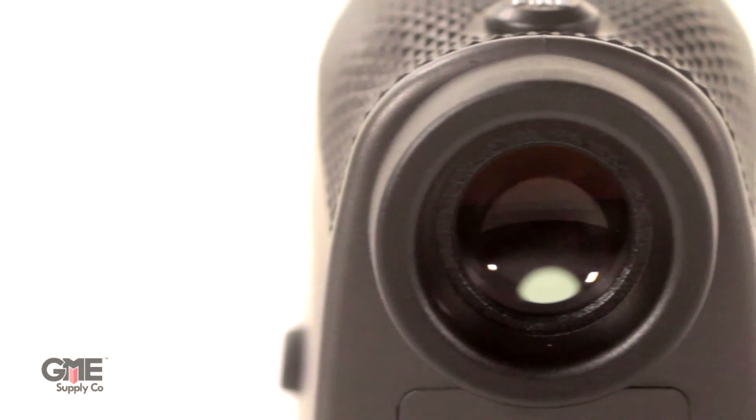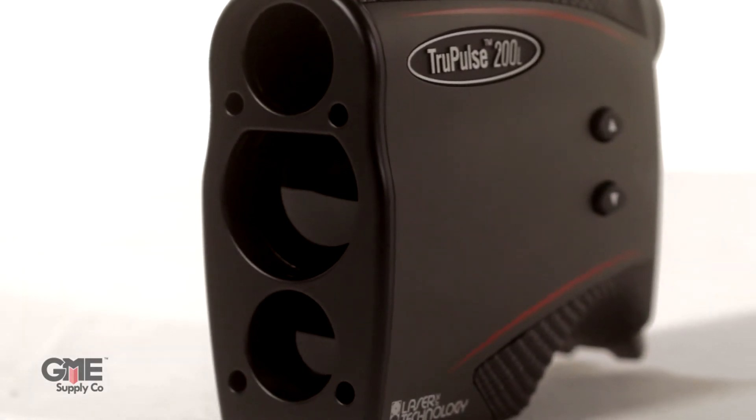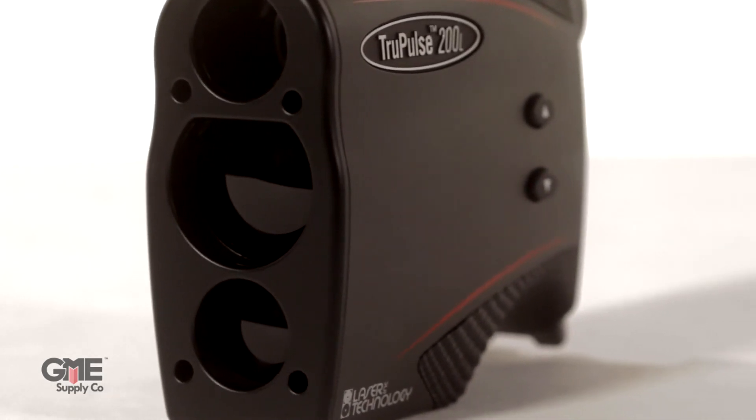The 200L features high quality optics that magnify your field of view by four times. It has a maximum range of 1,750 meters for reflective and non-reflective targets. And with that TruTargeting technology, it can achieve a 0.5 meter range accuracy.